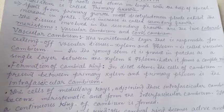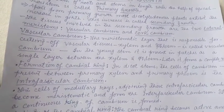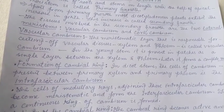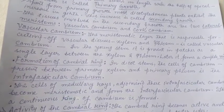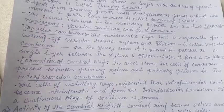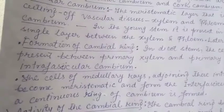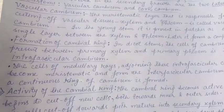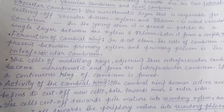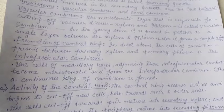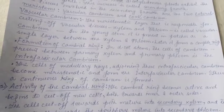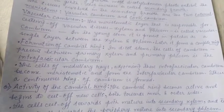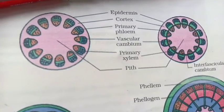In dicot stems, the cells of the cambium present between primary xylem and primary phloem form the intrafascicular cambium. The cells of the medullary rays adjoining the intrafascicular cambium become meristematic and form the interfascicular cambium. Thus a continuous ring of cambium is formed.